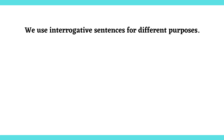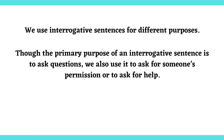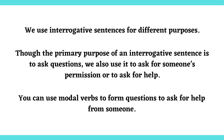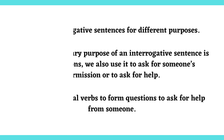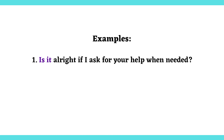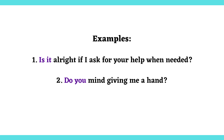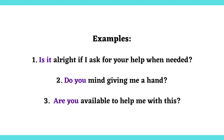Asking for help in English using interrogative sentences. We use interrogative sentences for different purposes. Though the primary purpose of an interrogative sentence is to ask questions, we also use it to ask for someone's permission or to ask for help. You can use modal verbs to form questions to ask for help from someone. Examples: 'Is it alright if I ask for your help when needed?' 'Do you mind giving me a hand?' 'Are you available to help me with this?'